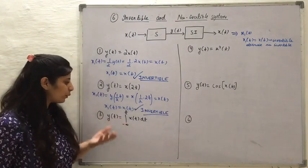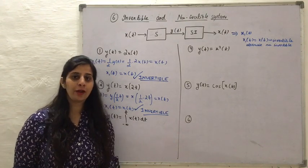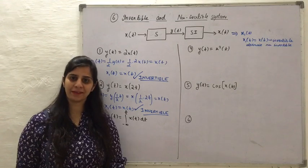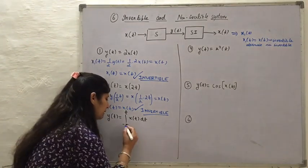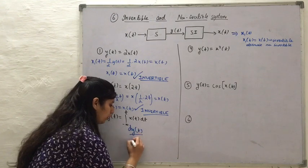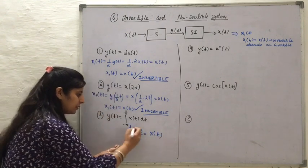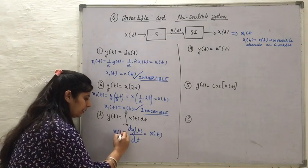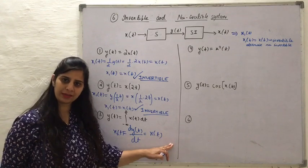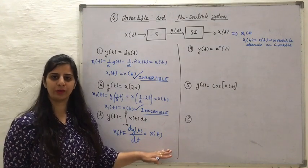In the third example, we have a system performing an integration operation. The inverse operation of integration is differentiation. When differentiation of Yt is done, we get back Xt. This is our X1t. Since X1t comes out to be equal to Xt, this system is also an invertible system.